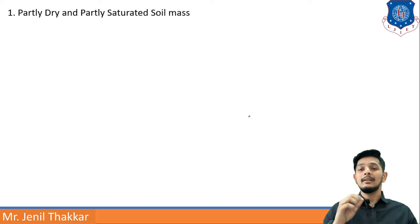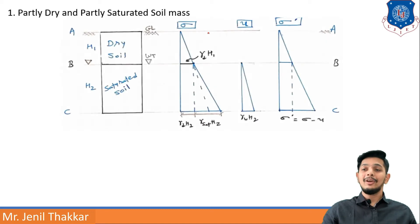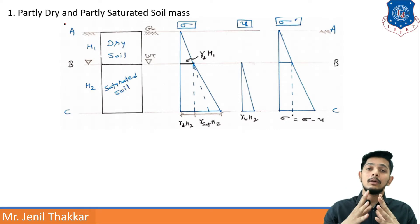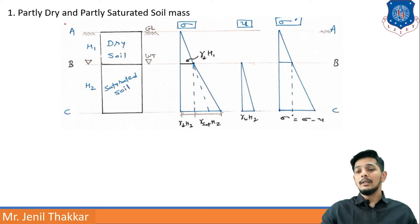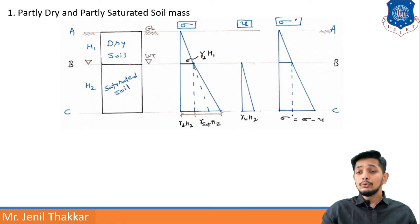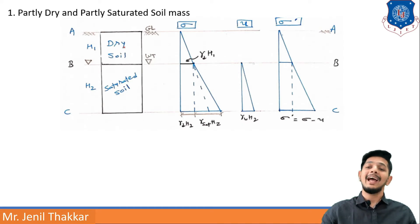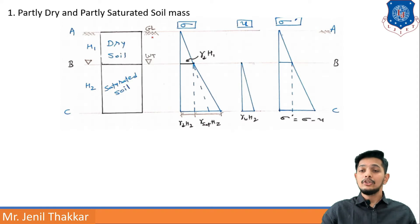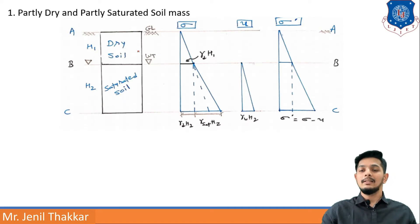First case: partly dry and partly saturated soil mass. The soil mass is in 2 parts — partly dry and partly saturated. Keep your attention on these diagrams because if you understand this diagram, this chapter is almost solved. Here you can see 3 lines: AA line, BB line, and CC line. Line BB separates the two parts. The upper portion of line BB is dry soil and the lower portion is saturated soil. Line AA is the ground line (GL), and at line BB the water table is lying, shown by an inverted triangle.